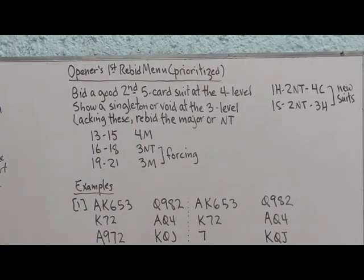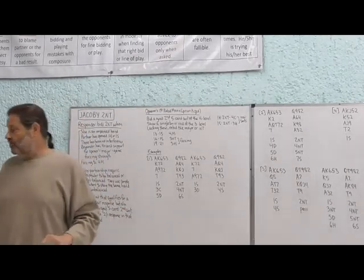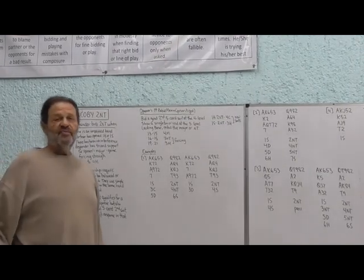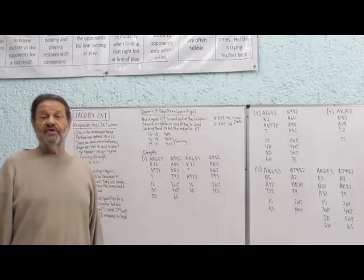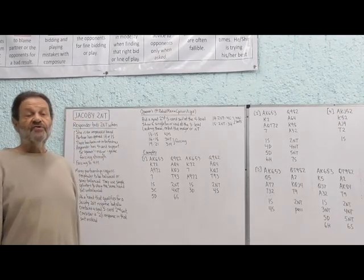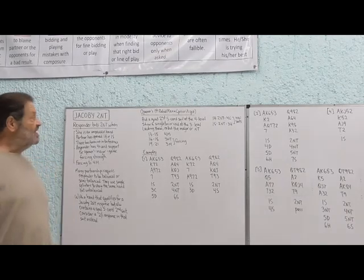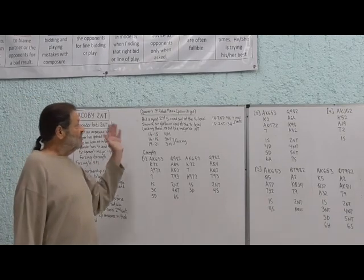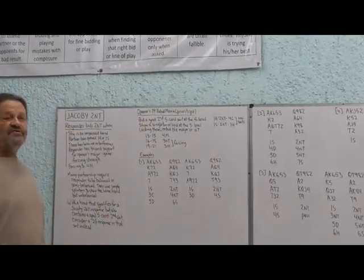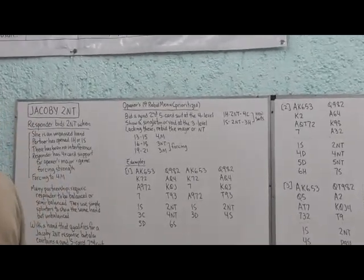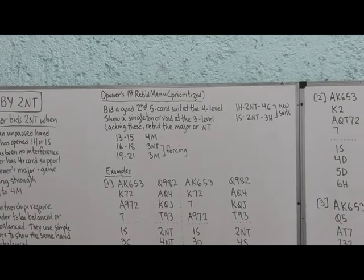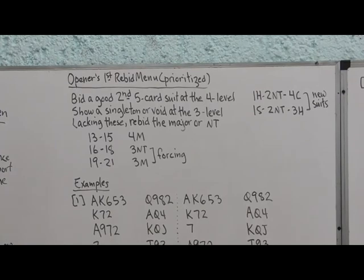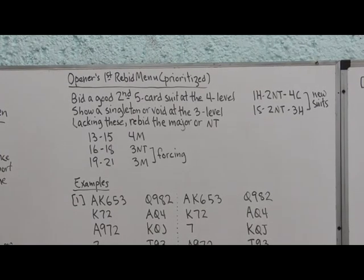The whole purpose of this system of bids is to try to find a slam. We know we have an excellent chance at game. As soon as partners open the bidding, one of the major, and we have four-card support, game force and strength in that major, we already know we're going to game in that major. So all that remains to be settled is whether we have a small or grand slam. And this system of bids is designed to try to unlock whether that's the case, which is the reason why the number one priority is to show a good second-card suit, because what we're looking for are suits that can take tricks.